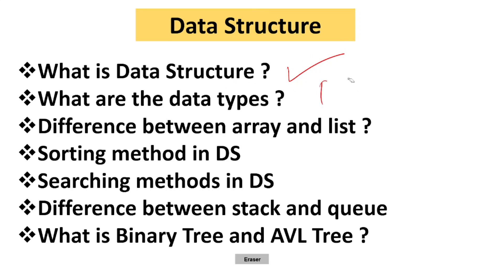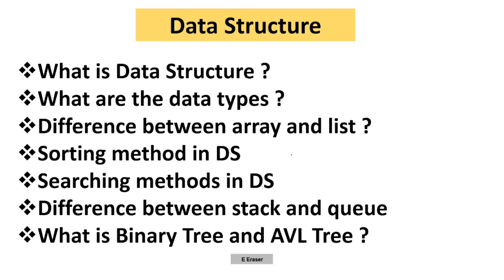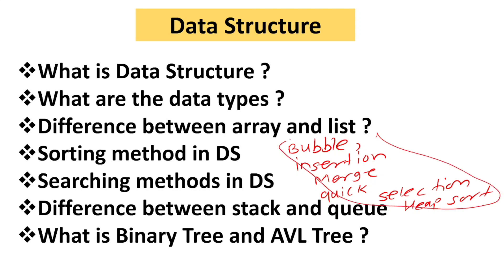Know the difference between array and list — arrays are a collection of similar data types, while a list is a collection of nodes. For sorting methods in data structures, prepare: bubble sort, insertion sort, merge sort, quick sort, selection sort, and heap sort — at least five to six sorting methods.